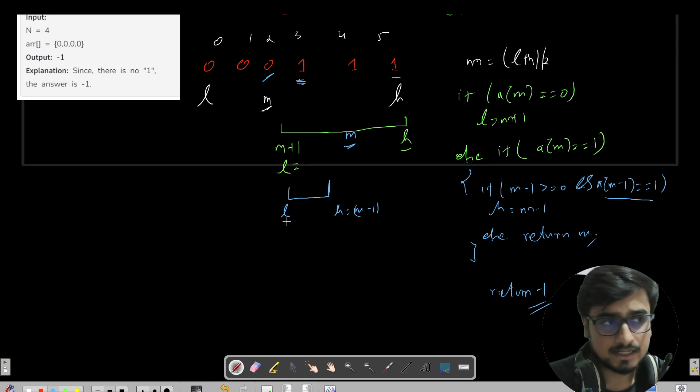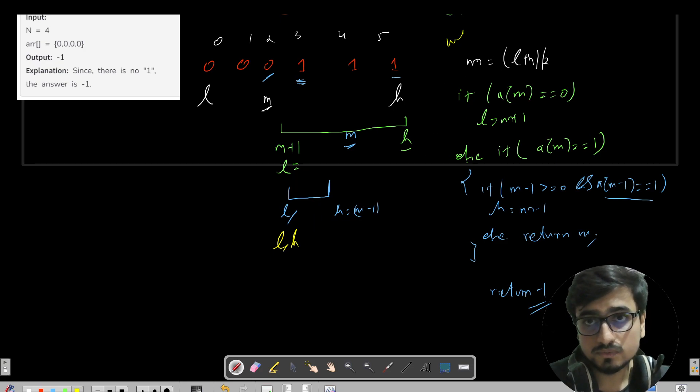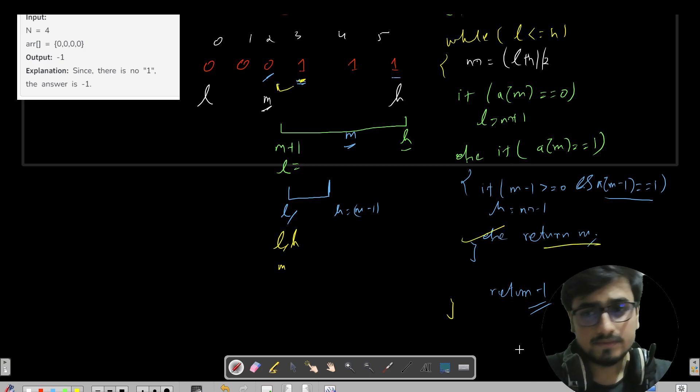Okay, so for this case, let's complete the iterations. L and h is pointing to the same index. L is here, h is m minus 1, so h is also here. That means l and h is pointing to the same index, so we need to run your binary search while l is less than equals to h. That is true. Now again m would be pointing to the same index, 3 plus 3 by 2 will give you 3. And now you can see it is 1 and the behind index is 0, so it falls in this else case and we return the m.